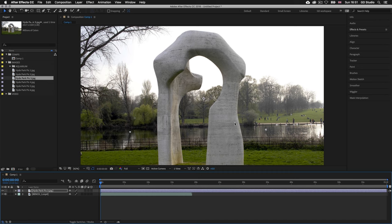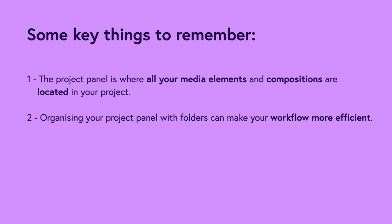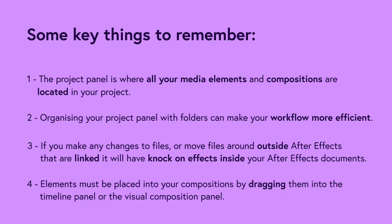When you drag media elements from the project panel into the composition panel they will always be placed at the top of the layer stack by default. A still image will span the entire length of the composition — to alter this you will need to change it down in the timeline panel. Key things to remember: the project panel is where all your media elements and compositions are located. Organizing it with folders makes your workflow more efficient. If you make any changes to files or move them outside After Effects, it will have knock-on effects inside your document. Elements must be placed into compositions by dragging them from the project panel either into the timeline or into the visual composition panel.